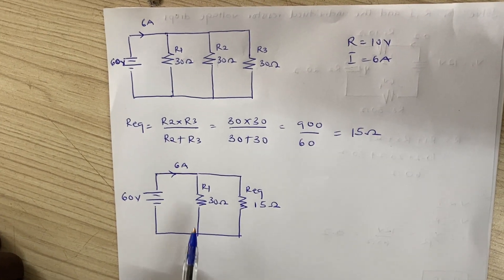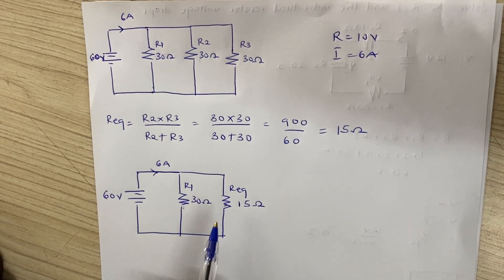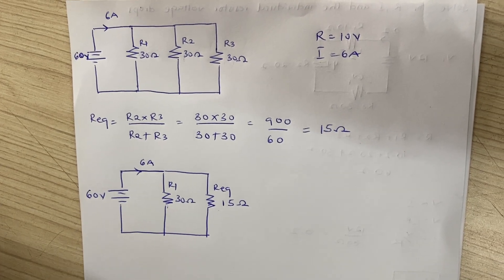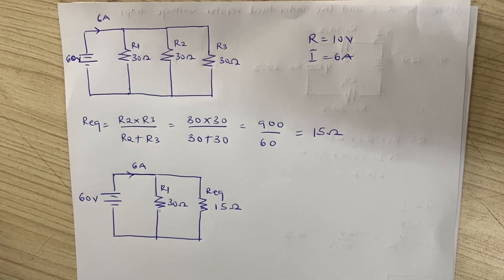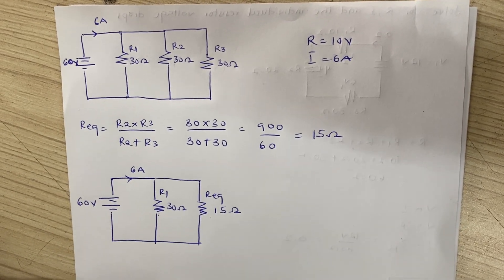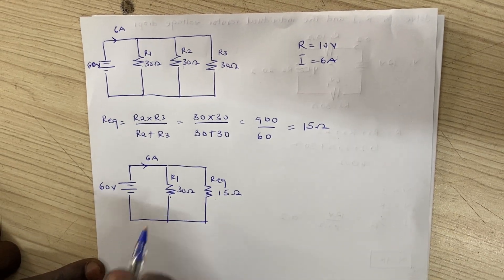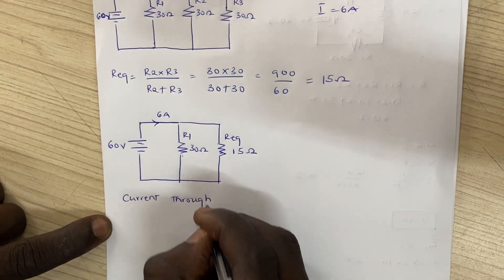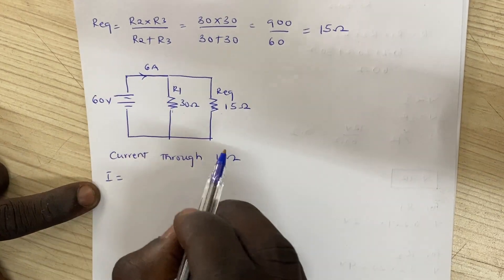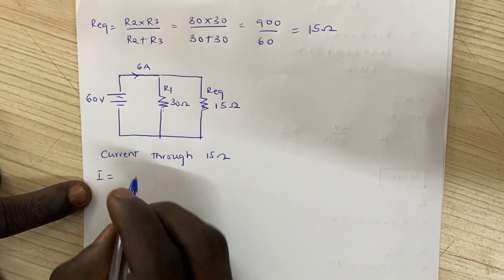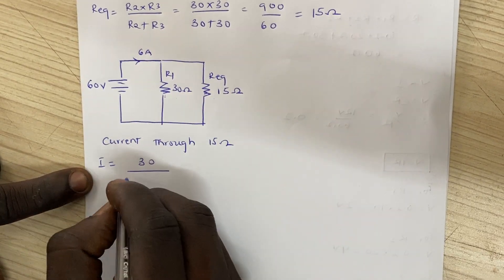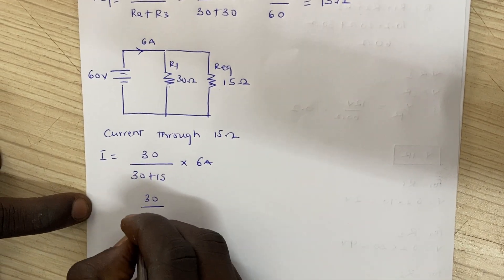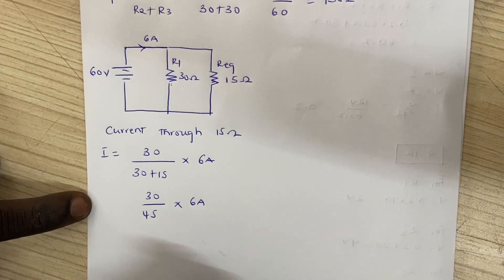We need to find the current that flows through R1 and the current that flows through the equivalent resistor. Using the current divider rule, the resistor you are NOT finding the current through becomes the numerator, and the denominator is the sum of both resistors, multiplied by the total current. To find the current through the 15 ohm equivalent, we use R1 as the numerator: I through 15 ohms equals 30 divided by (30 plus 15), multiplied by 6 amps.